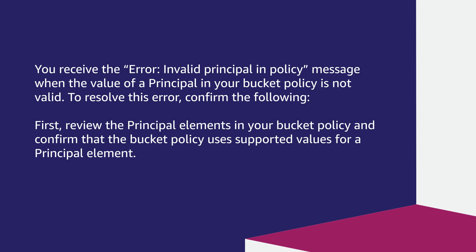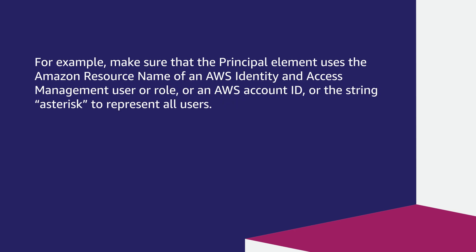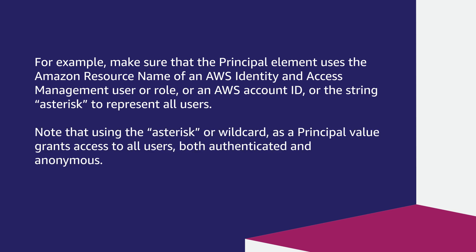First, review the principle elements in your bucket policy and confirm that the bucket policy uses supported values for a principle element. For example, make sure that the principle element uses the Amazon Resource Name of an AWS Identity and Access Management user or role, or an AWS account ID, or the string asterisk to represent all users. Note that using the asterisk or wildcard as a principle value grants access to all users, both authenticated and anonymous.